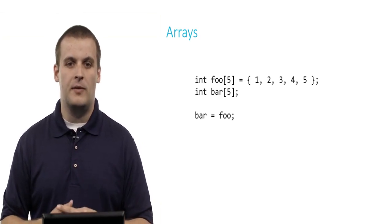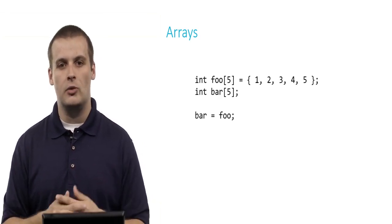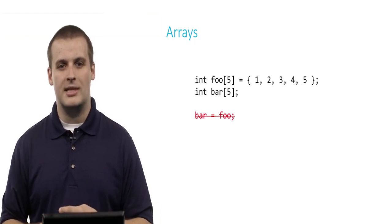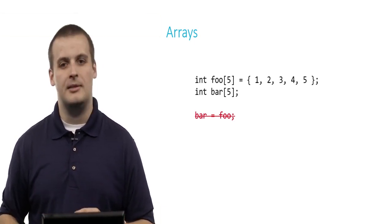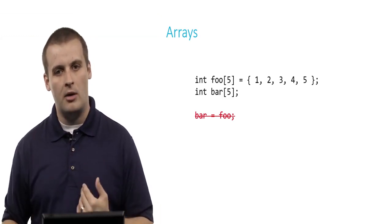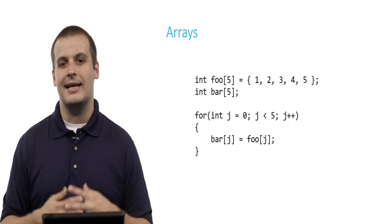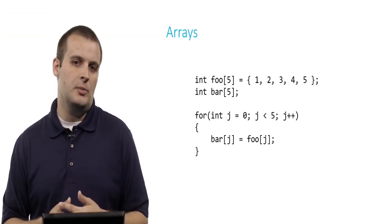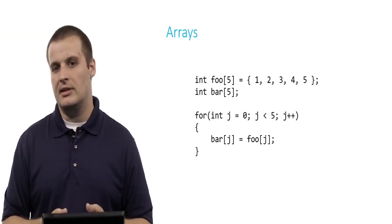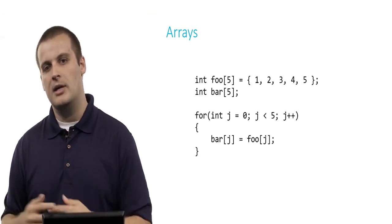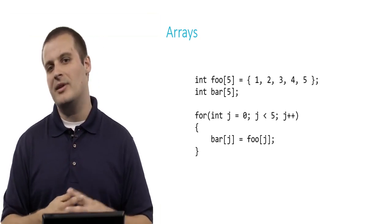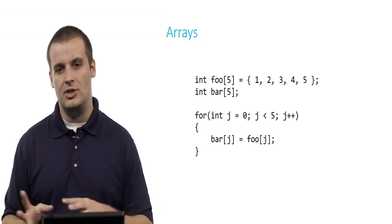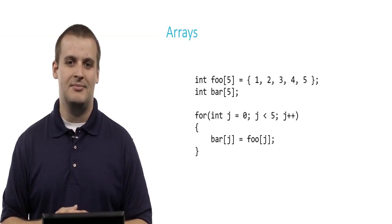So for example, trying to assign foo to bar won't work because it's an array and that's not legal C. Instead, if we want to copy the contents of foo into bar, we need a for loop that goes from j equal to 0 up to 5, incrementing j on every iteration and assigning elements one by one. This results in bar also being 1, 2, 3, 4, 5 — but we have to do it this slow, element-by-element way instead of copying the entire array. In more modern programming languages you can use simple equals syntax, but unfortunately in C we're not allowed to do that.